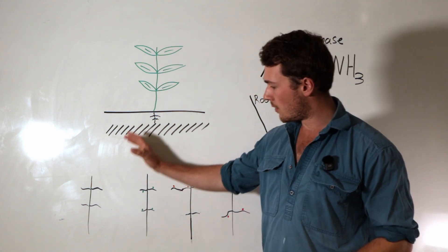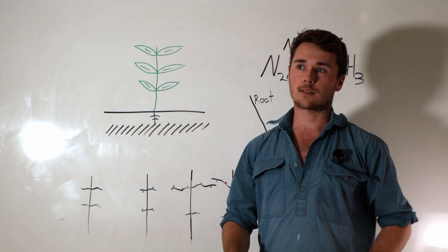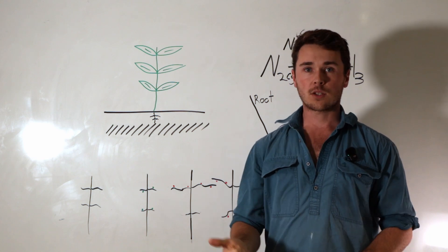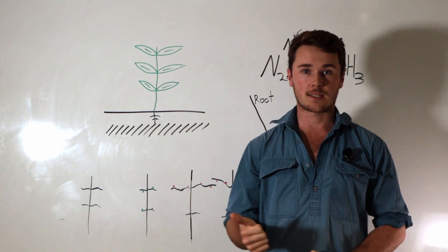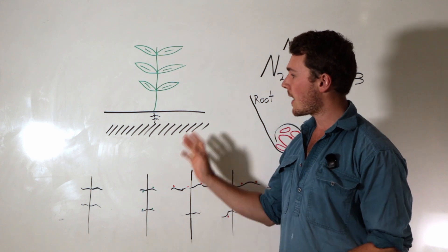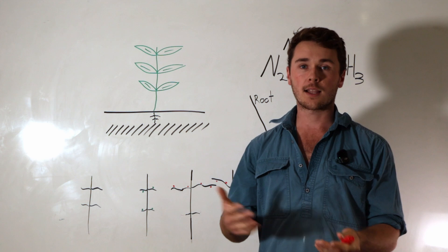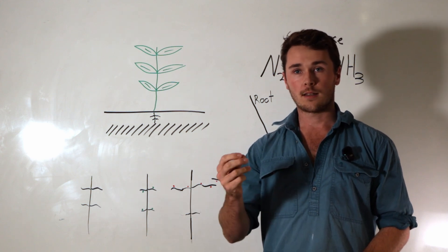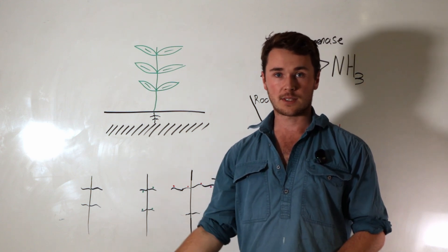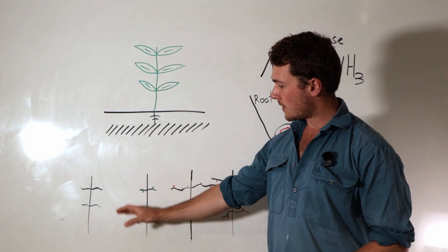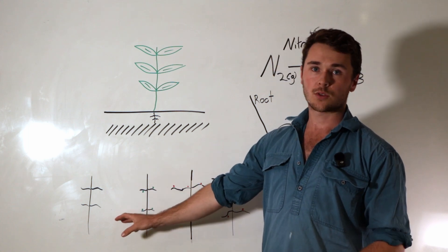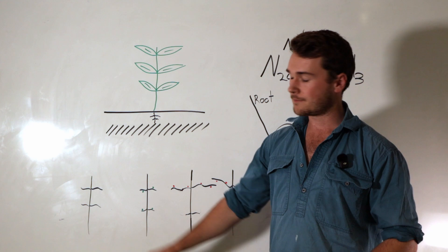If you have no nodules at all, it could mean a few things. Most likely is that the rhizobia bacteria are simply not in your soil. If you haven't had legumes in your rotation for a while or if you haven't inoculated your legumes with the rhizobia specific for that particular legume, then there's a good chance you're not going to have any rhizobia in your soil and so it's not going to nodulate. So that's one reason.